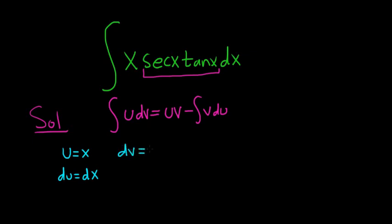Instead, we'll let dv be what's left over. So secant x tangent x dx. And we can easily integrate this. This is simply v equals secant x, because the derivative of secant is secant tangent.